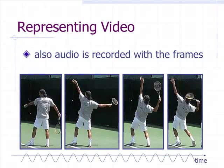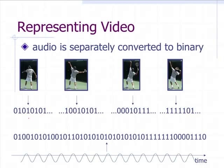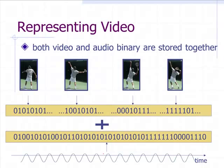Also, the audio is recorded with each and every frame. Then the next thing we do, we take each and every frame, and we convert that into binary using the same process we do for images. And then we take the audio signal, and we take the voltage levels, and we convert that into binary. And then we add together both the video and the audio in binary, and we store it together into one single file. And that's how you represent video.